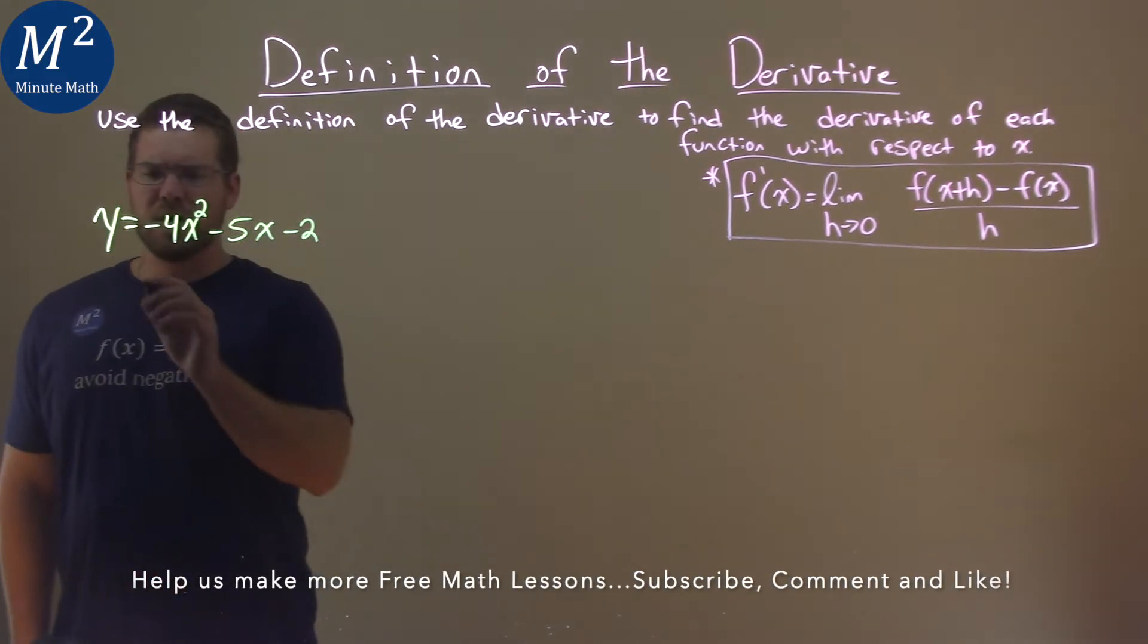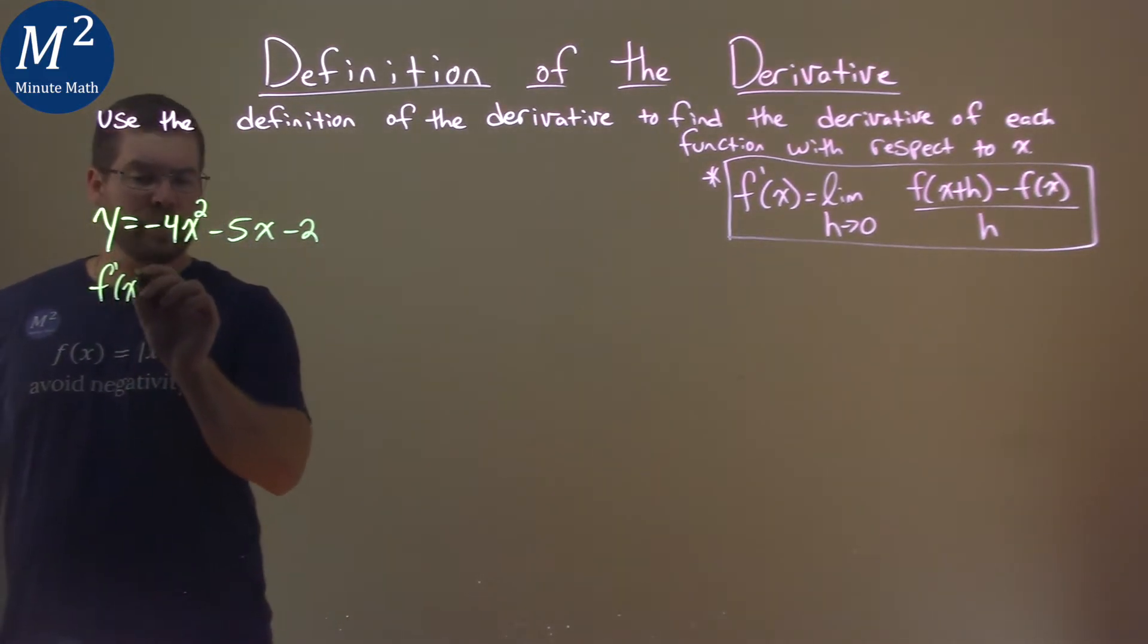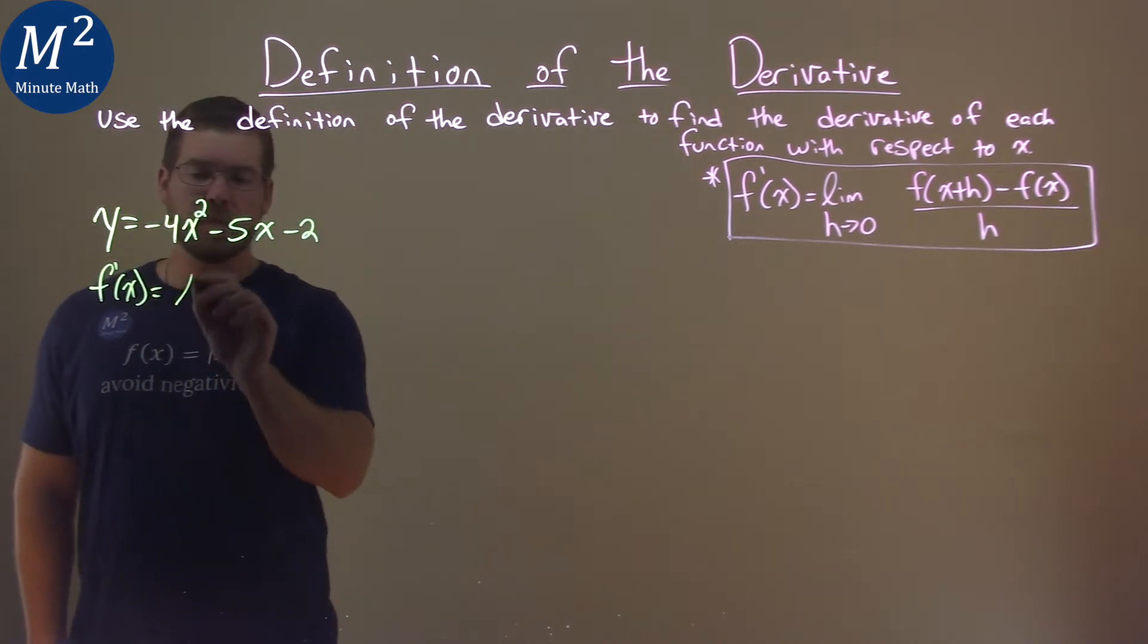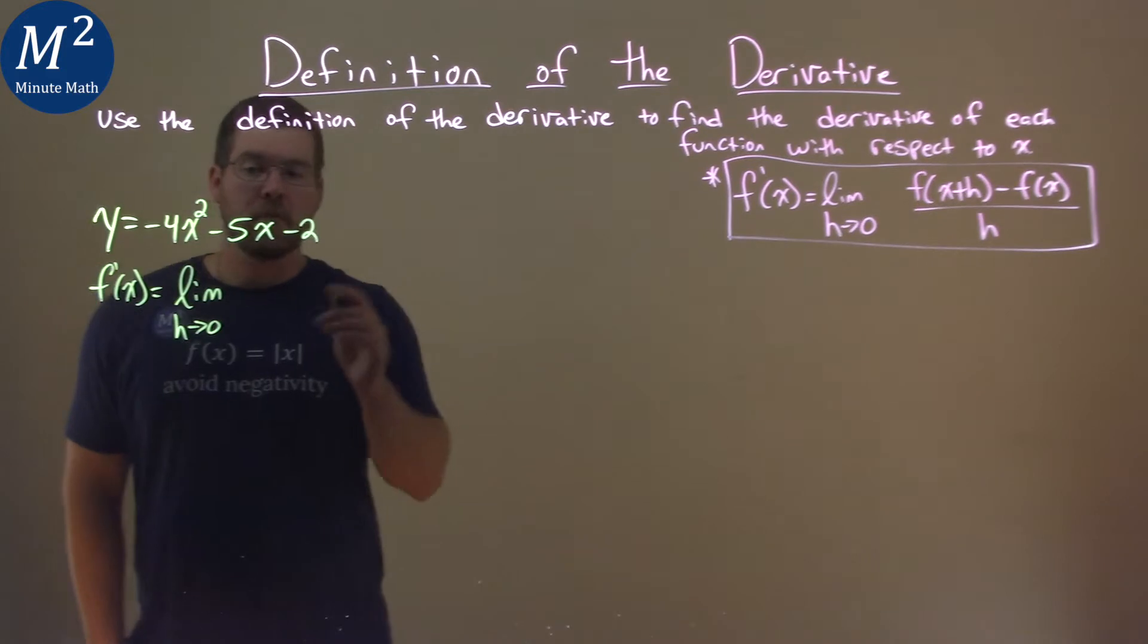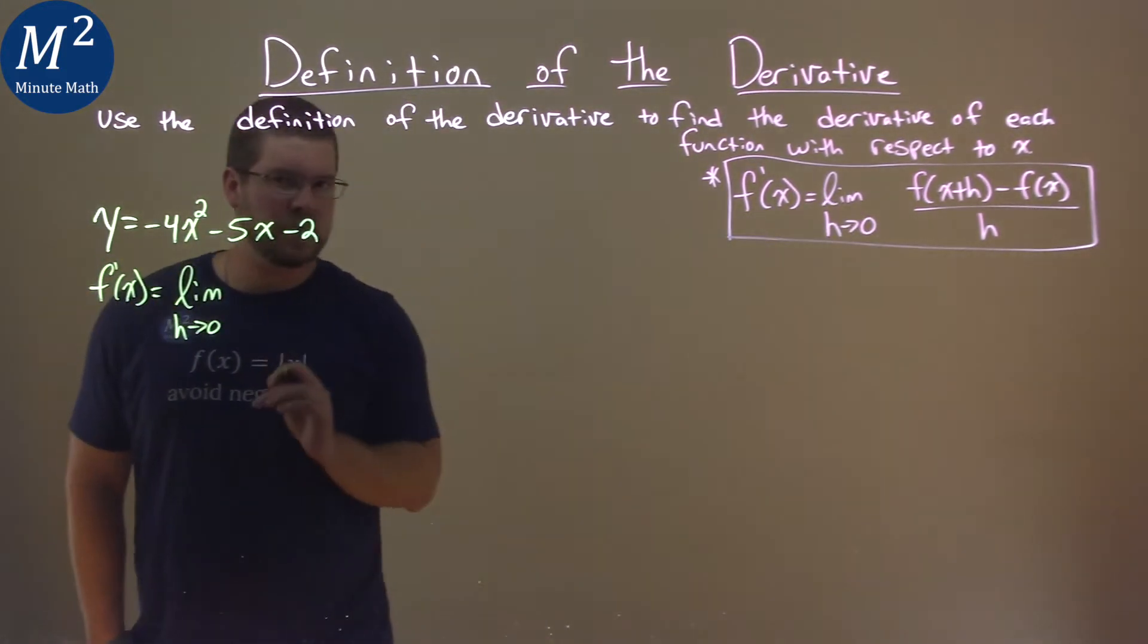So our definition tells us that f prime of x here is equal to the limit as h approaches 0 of our function, right here our function, but instead of an x, we have an x plus h in there.